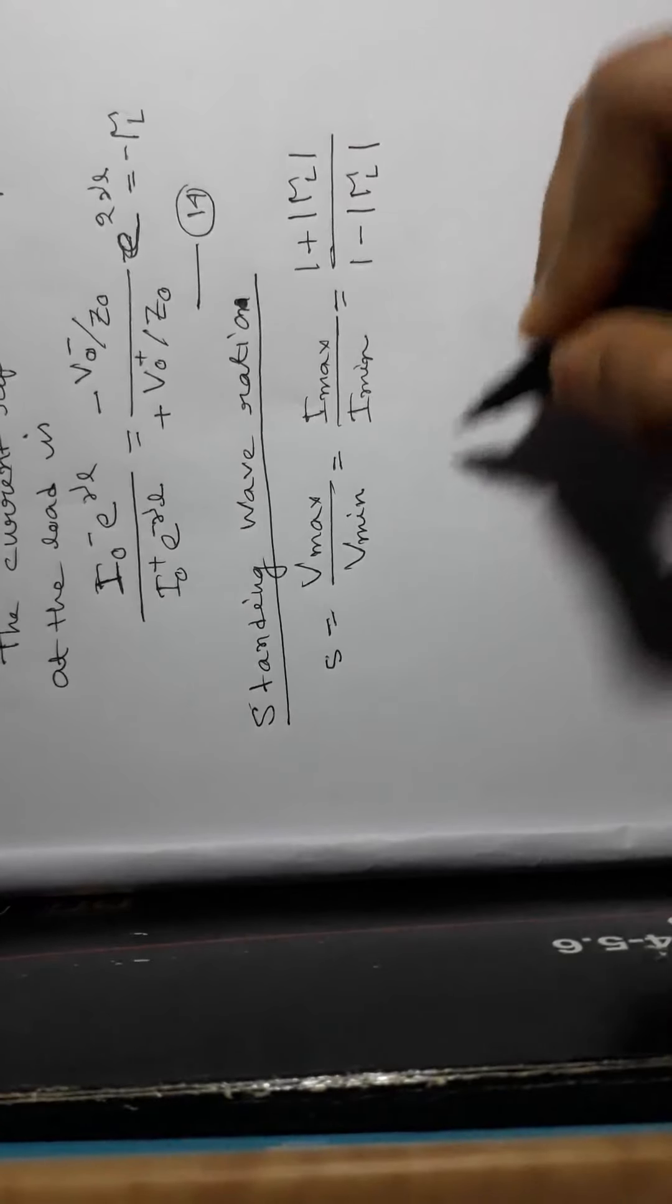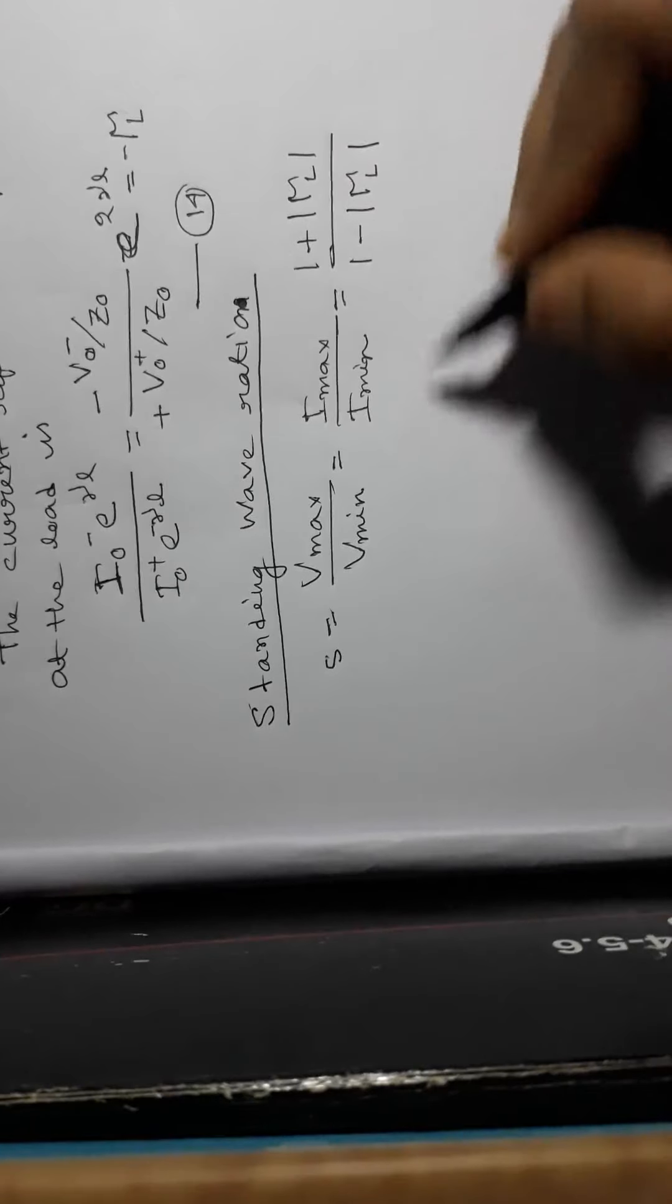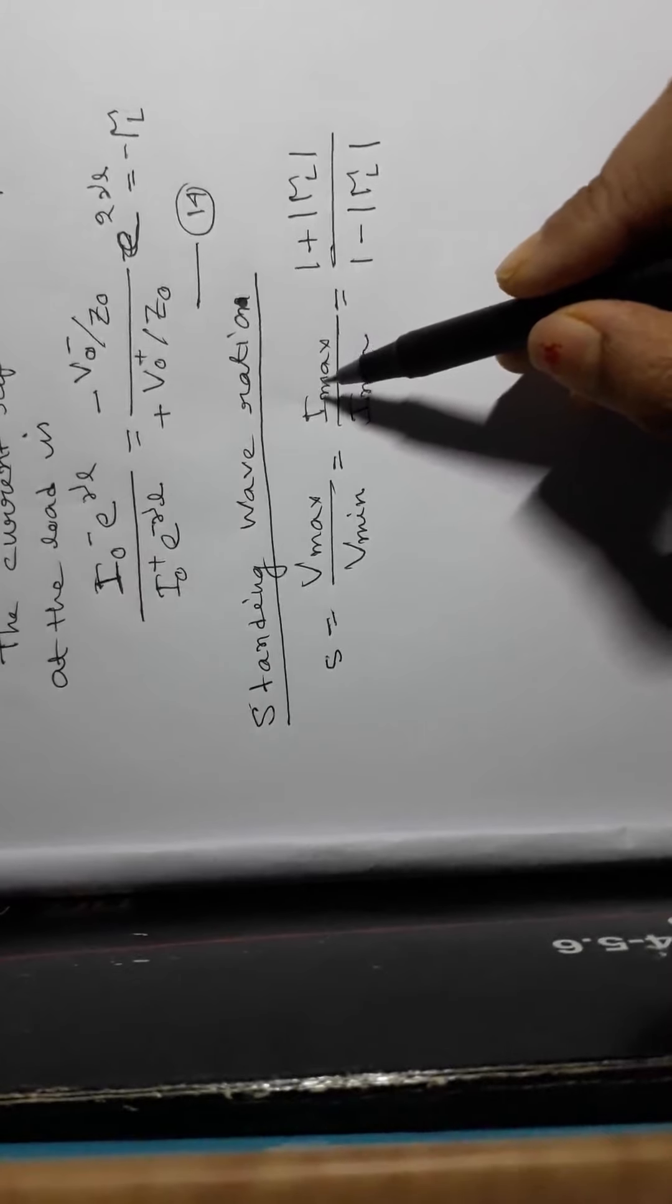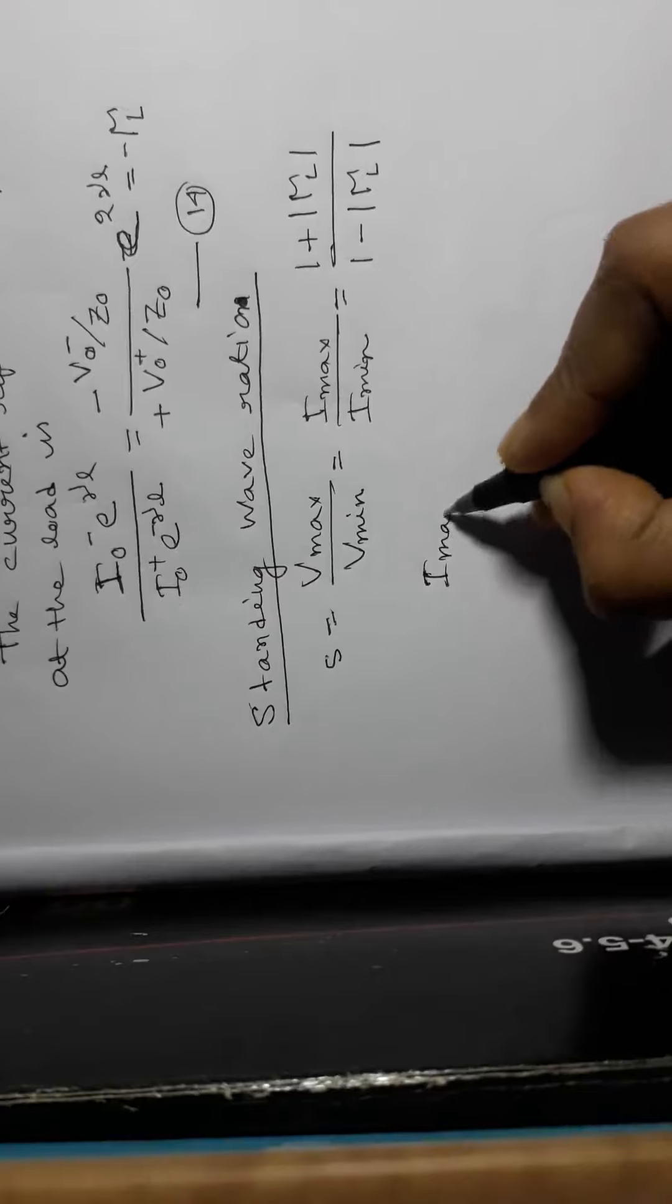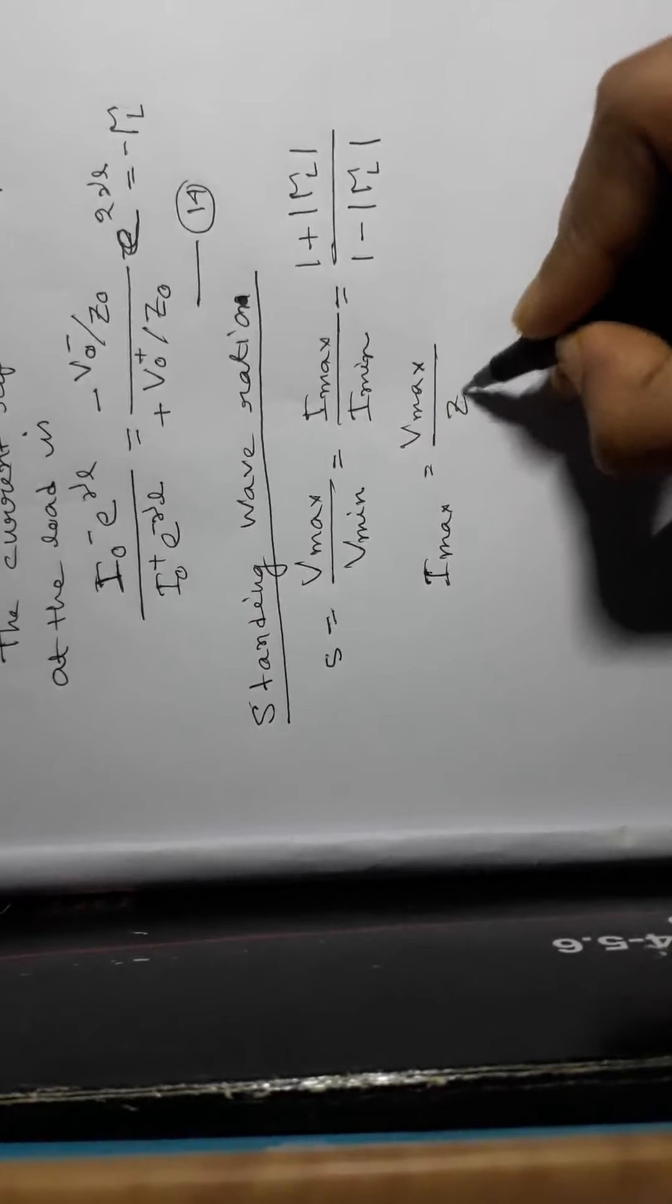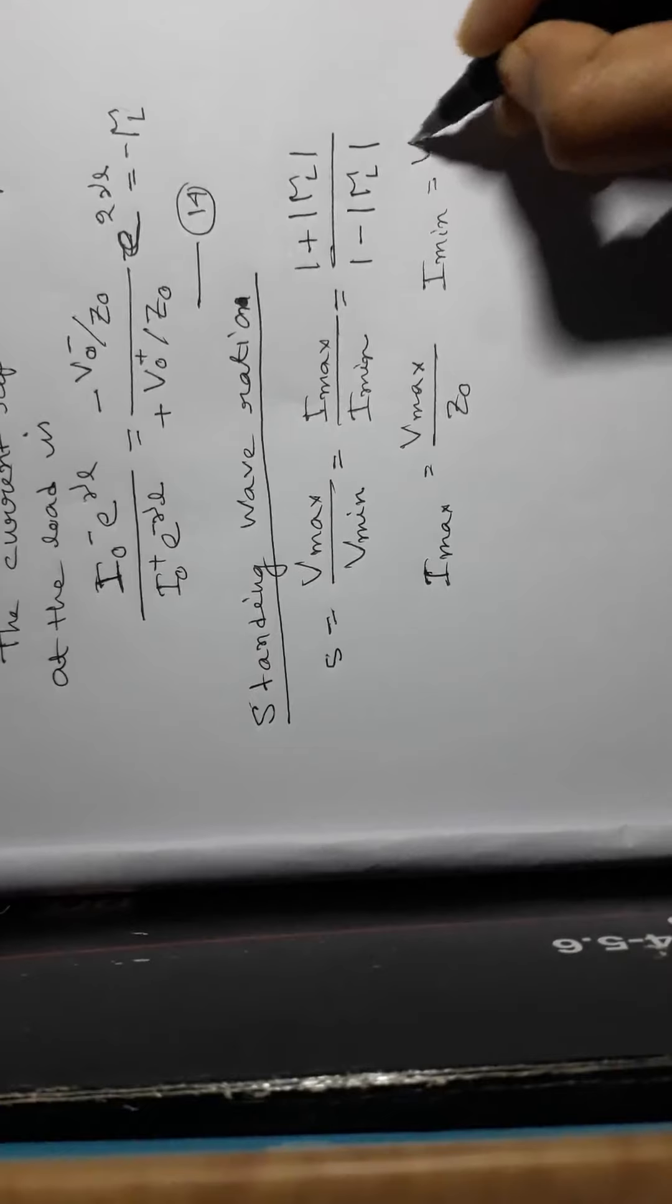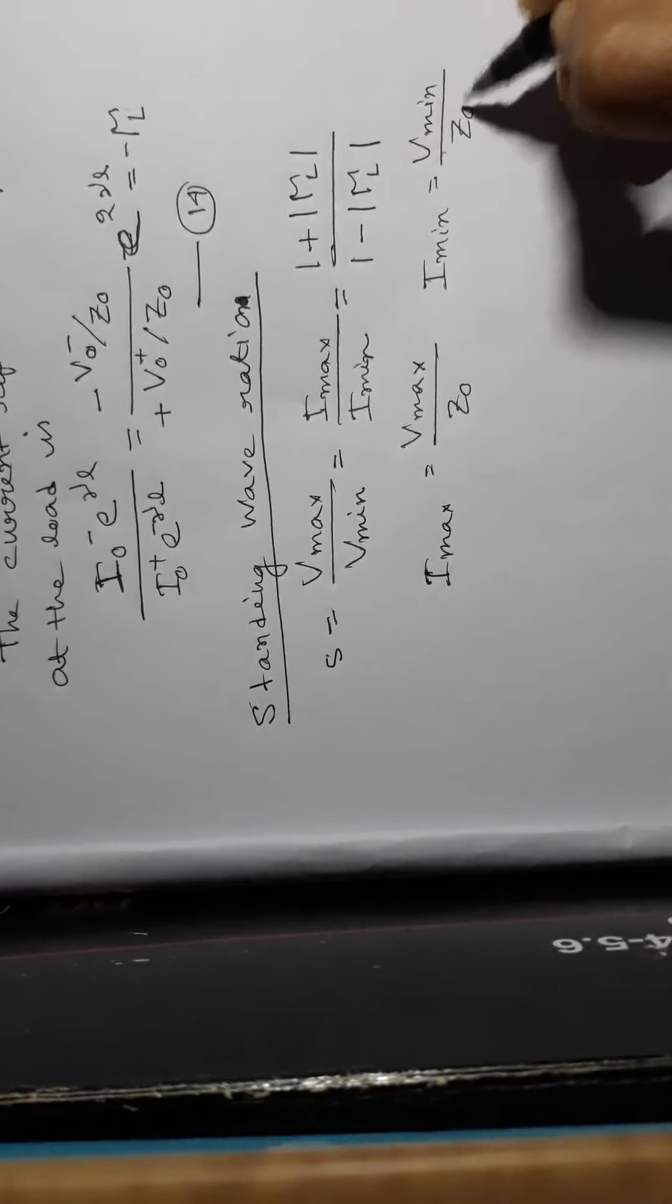Because if we consider I max, then I max will be equal to V max by Z0, and I min will be V min by Z0.